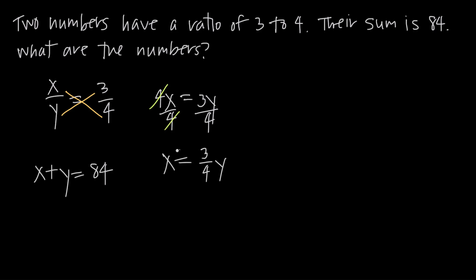Now I have a value for x that I can plug into my other equation. So since I know that x is equal to 3 fourths y, I can plug 3 fourths y in for x here and get 3 fourths y plus y is equal to 84.